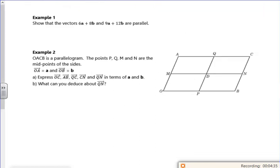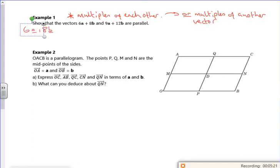Right then, so we've got an example. These you've definitely seen in school. These are definitely on GCSE papers. Example one then: show that the vectors 6A plus 8B and 9A plus 12B are parallel. So then we want some multiples of each other if they're parallel. Are multiples of another vector.